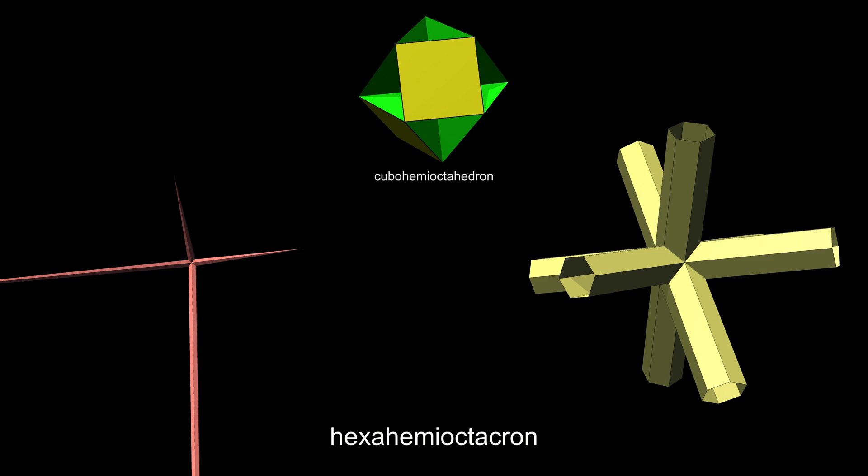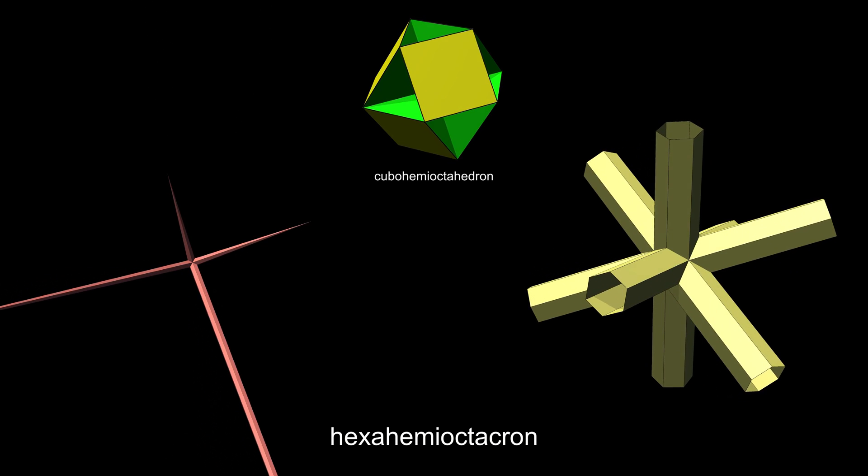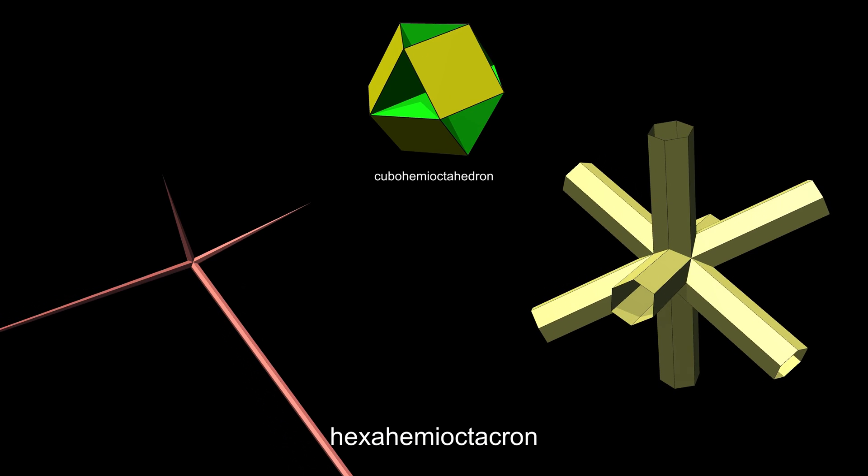The dual of the cubohemioctahedron is the hexahemioctochrome. This is visually the same as the previous one, because the two have the same faces through the center.